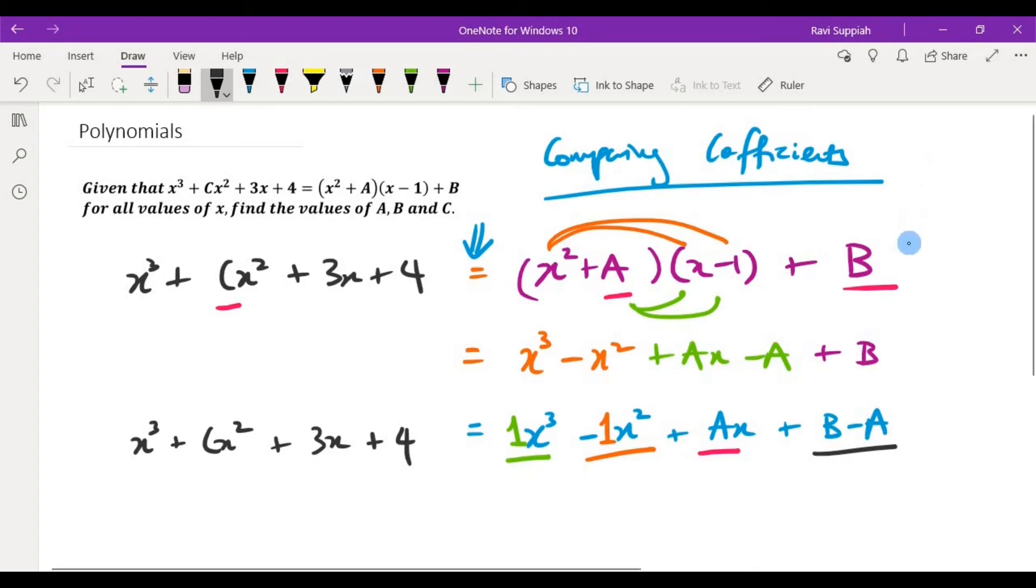Now when I compare coefficients, I can see that for the x cubed, the coefficient here is 1. Over on the left hand side, there is also a 1 here. You don't write the 1 but there is actually a 1. So as you can see, both the coefficients are the same.